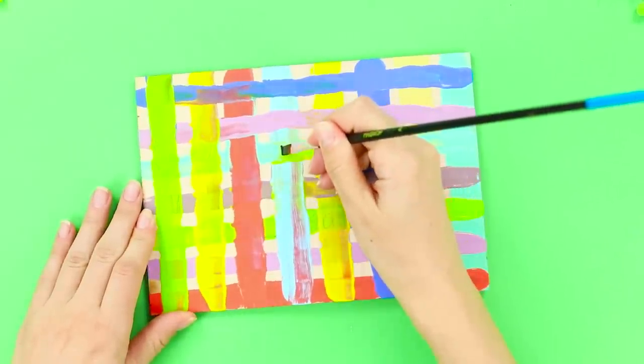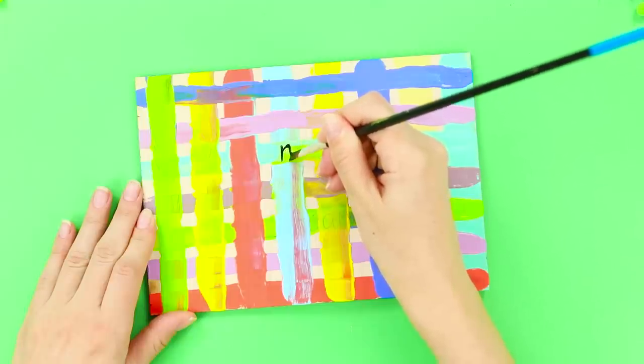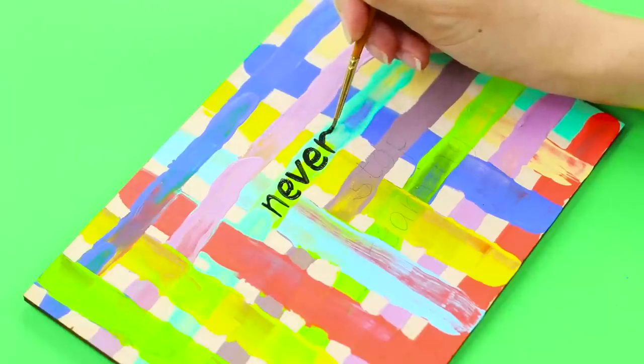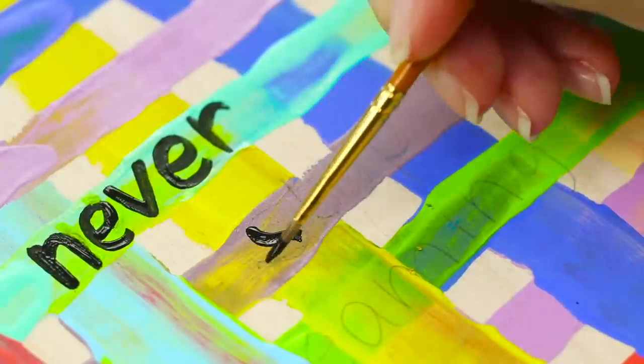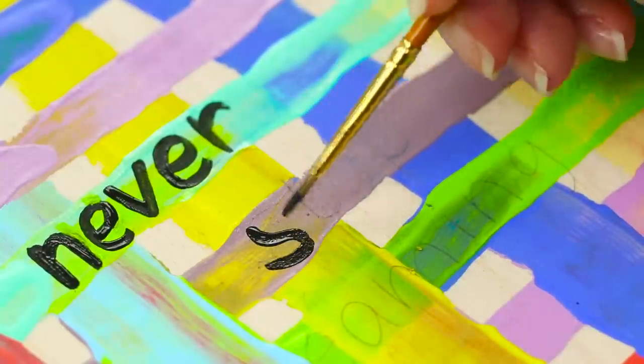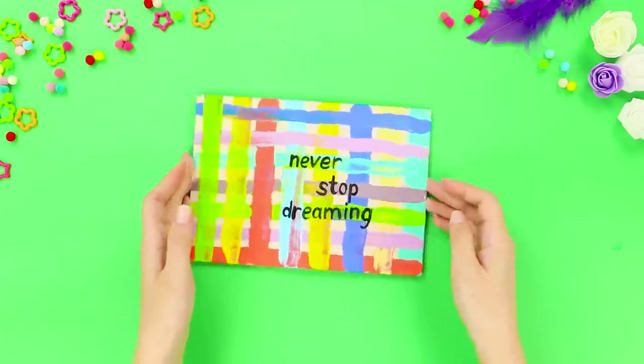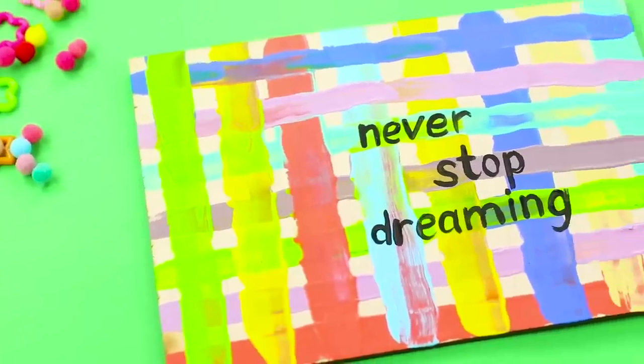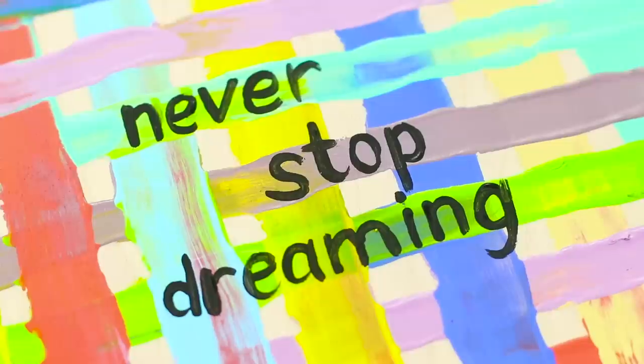When the paint is dry, write something over the paint with a thin brush. You can write the letters in pencil first, so they come out neater. Done! This picture can be set up on a shelf, or you can offer it to a friend.